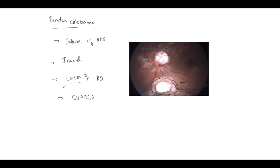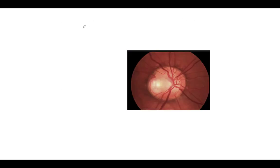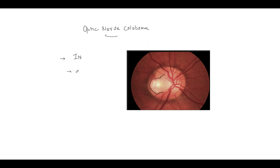This is an optic nerve coloboma. It looks like glaucoma but it is absolutely not glaucoma. How to differentiate: you won't get nasalization of vessels, a deep cup, or NRR deficiency here. In optic nerve coloboma, can you see — there is an irregular cup, and in that area there is a defect. It is also more common in the inferior nasal side, similar to fundus coloboma and iris coloboma. A varying amount of glial tissue typically fills the defect.